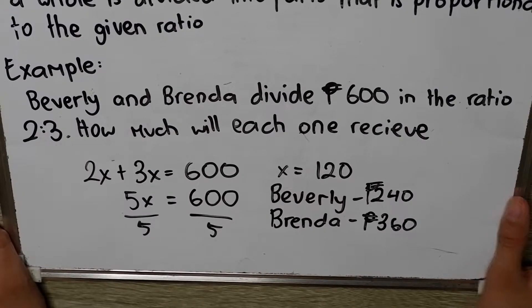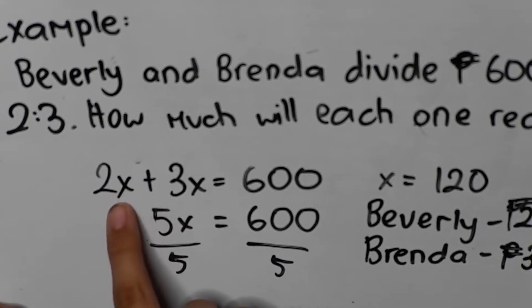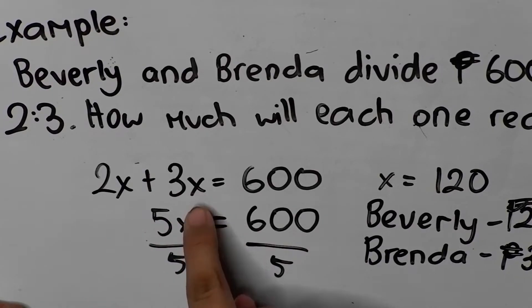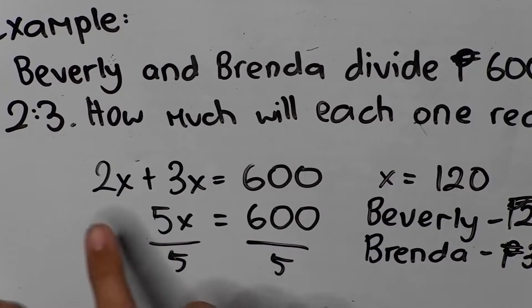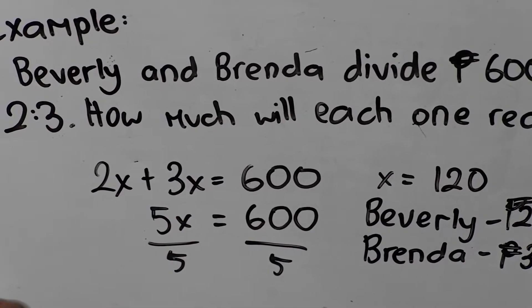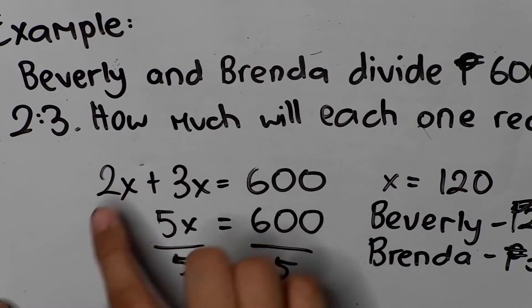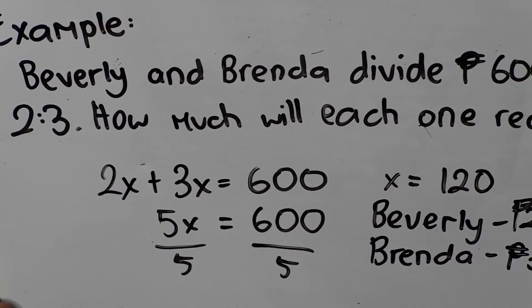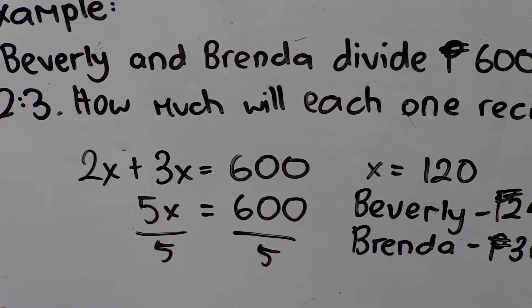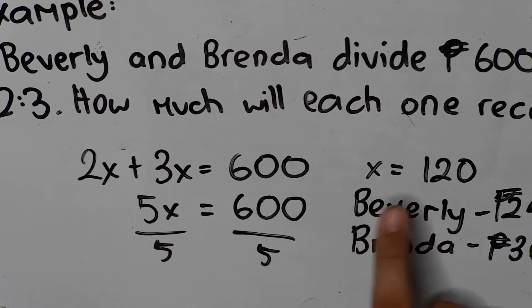So, we have, this is, I'm just gonna zoom in. This is the amount that Beverly will get. And this is the amount of what Brenda will get. So, we have 2x plus 3x. x is just a variable. Equals 600 pesos. So, we add these together. So, we have 5x equals 600. And then, we divide 5 by both sides to cancel the 5. And then, we have x equals 120.